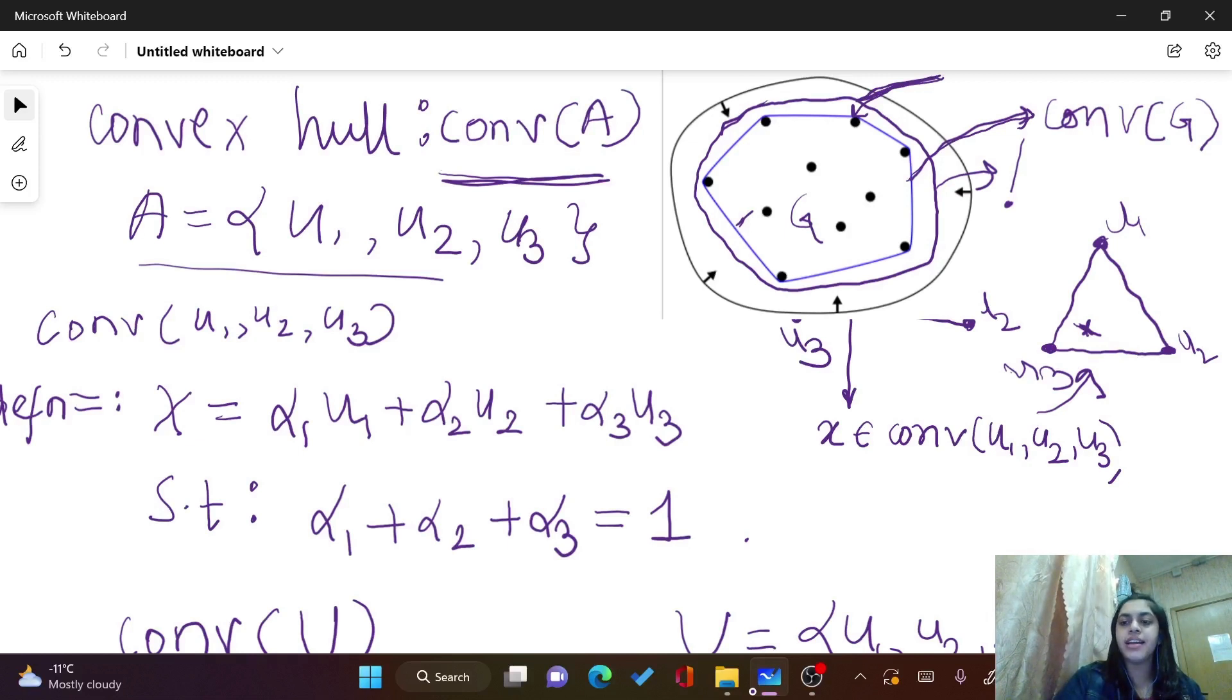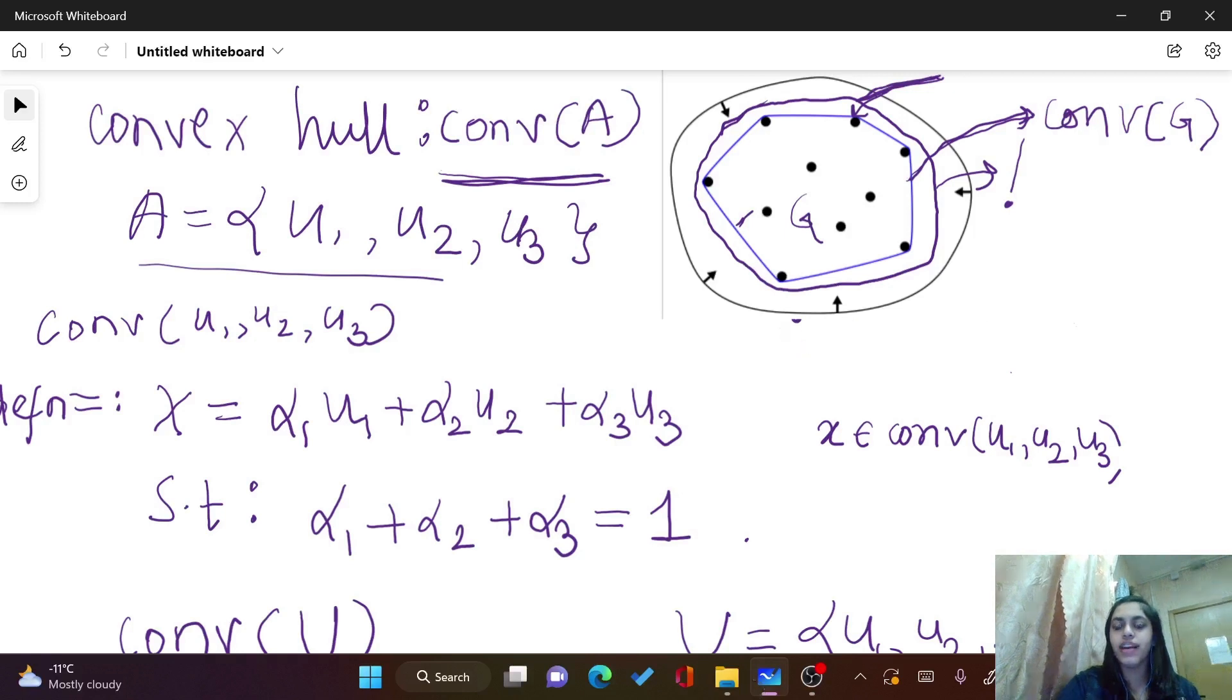Let's try to analyze the convex hull of just one point. So I have this one point and I have to understand what convex set can cover this point, which also has to be minimum. So it's going to be the point itself. So convex hull of a point is a point itself.